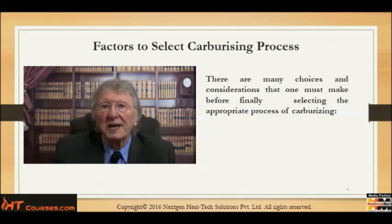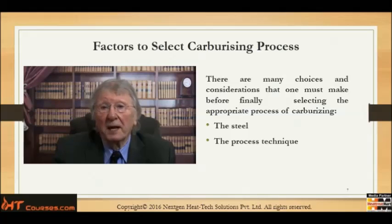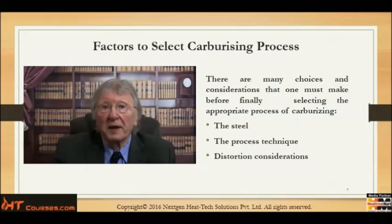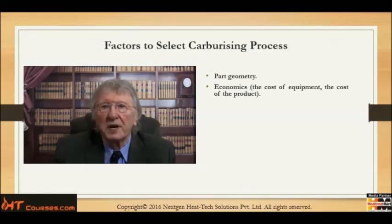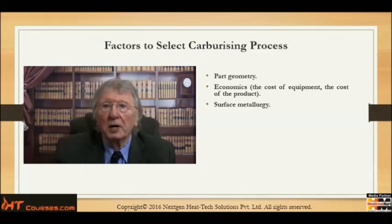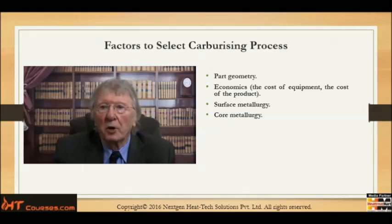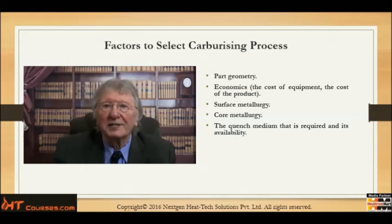First of all, the steel. Secondly, the process technique. Thirdly, distortion considerations. Fourthly, part performance and part geometry. Then economics — that is the cost of the equipment and the cost of the product — surface metallurgy that is required, core metallurgy that is required, and the quench medium that is required and its availability.